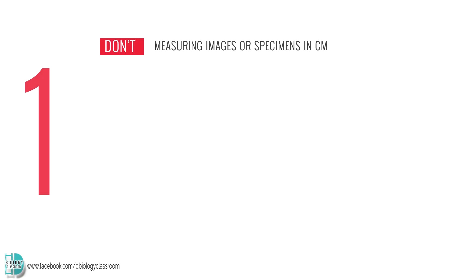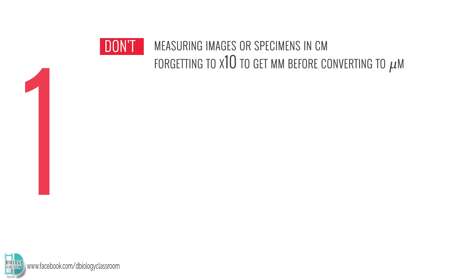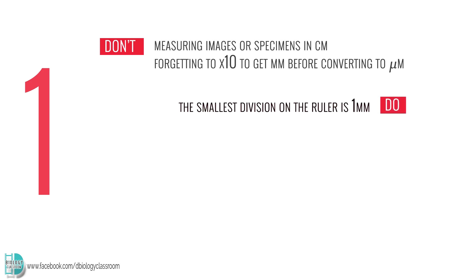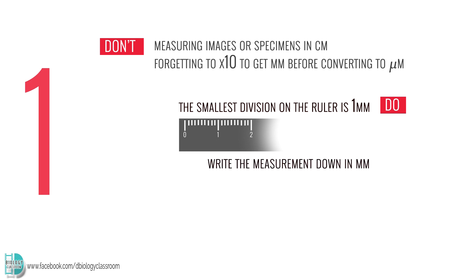Number 1: measuring images or specimens in centimeters and forgetting to convert to millimeters before converting to micrometers. Remember that the smallest division on the ruler you use is 1 millimeter. So the right thing to do is to write the measurement down in millimeters and start the conversion from there.